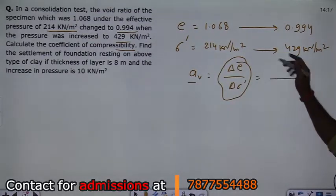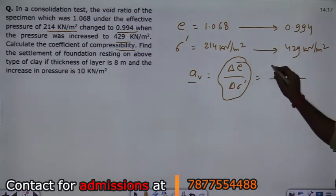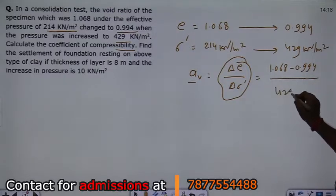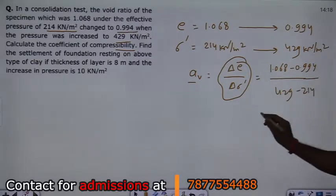So when you minus here, then you minus the big value. 1.068 minus 0.994 divided by 429 minus 214. So you get the result.